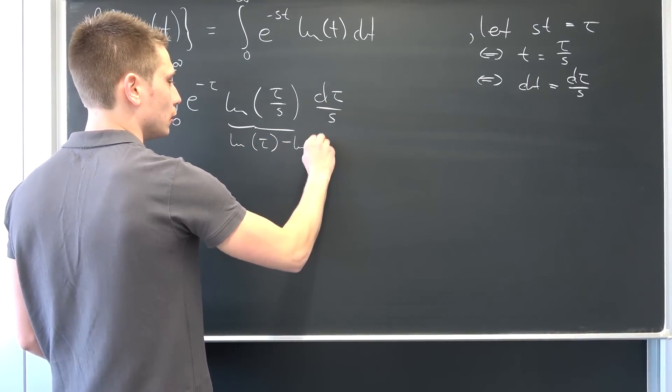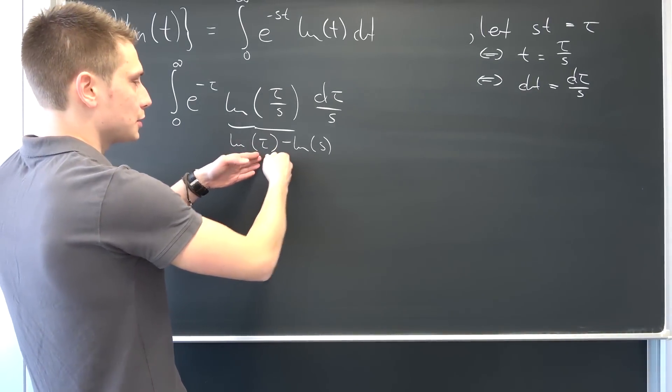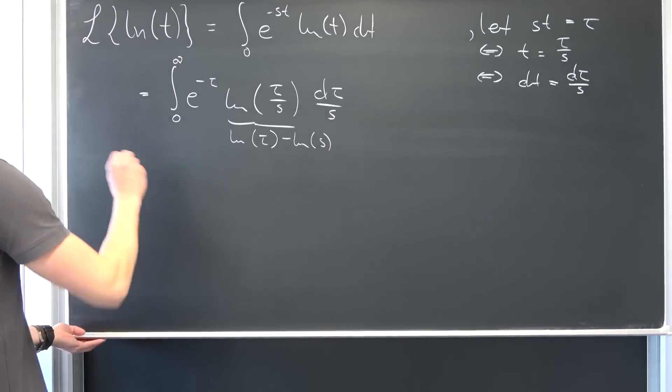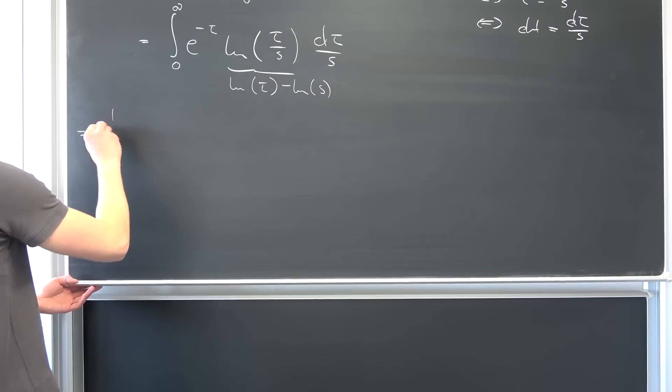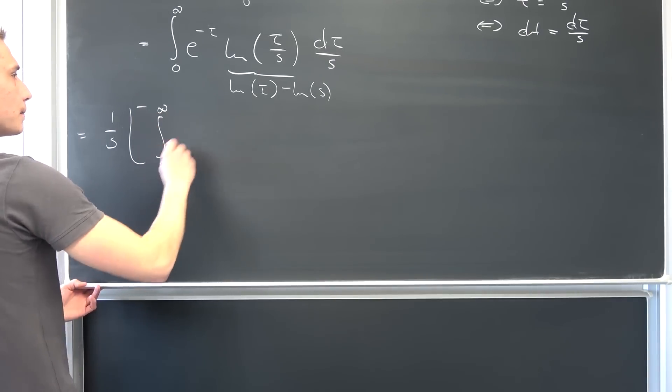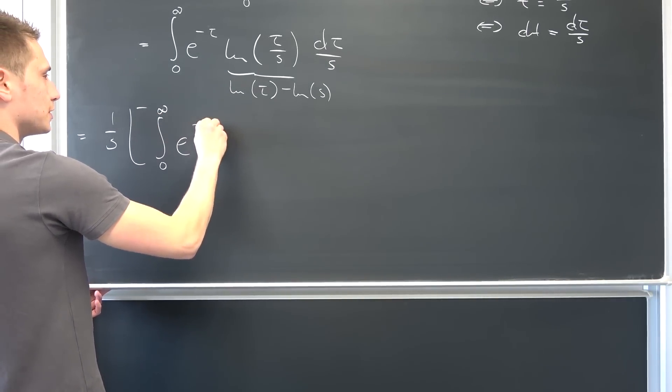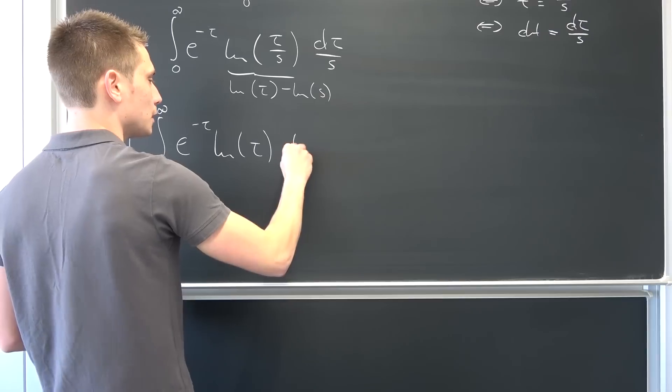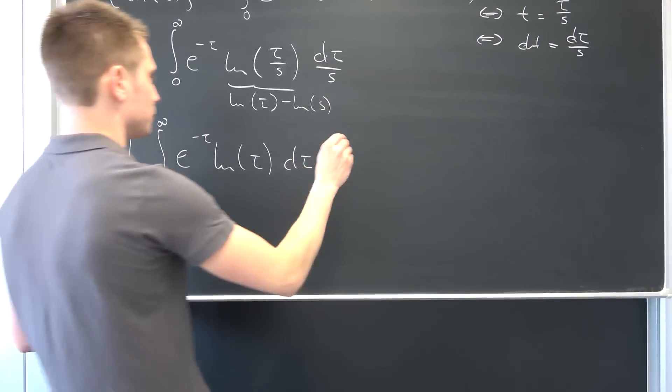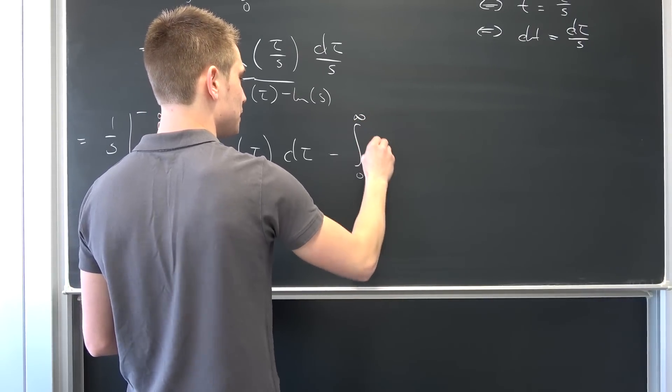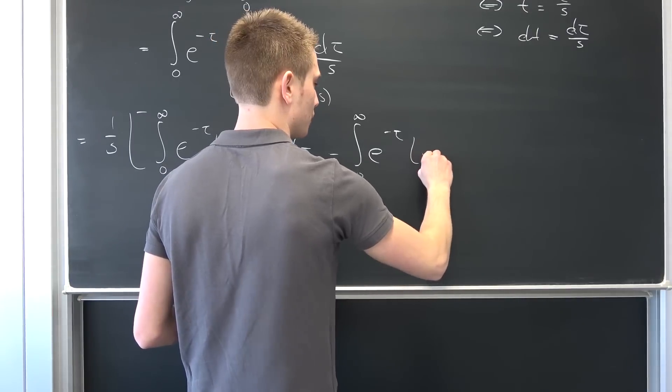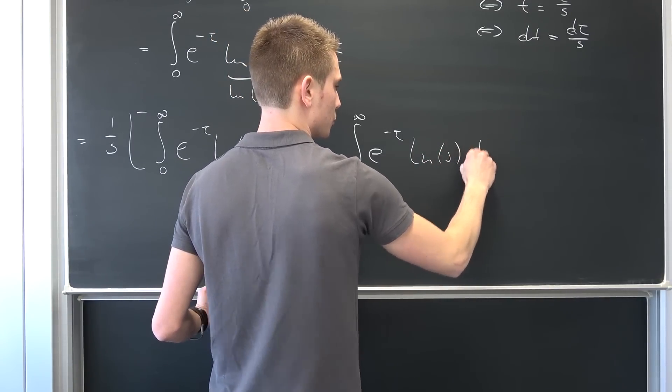Meaning we can use the linearity of the integral to break all the stuff up if our integral actually converges. Bring the 1 over s factor to the outside and this is going to leave us with 1 over s times big brackets, integral from zero to infinity of e to negative tau natural log of tau integrated with respect to tau, minus integral from zero to infinity e to the negative tau natural log of s integrated with respect to tau.